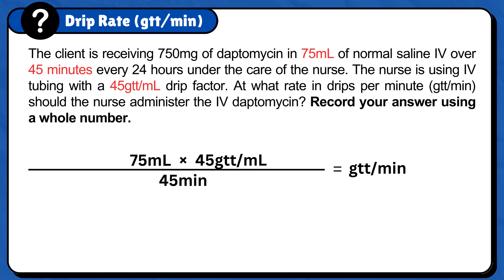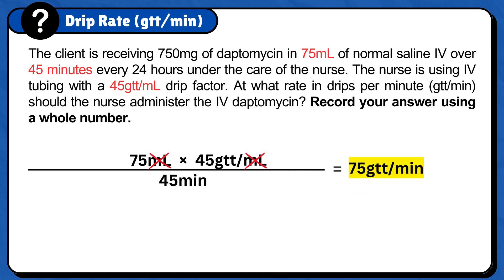75 milliliters times 45 gtt per milliliter divided by 45 minutes. Milliliter cancels out and the answer is 75 gtt per minute. So, 75 gtt per minute is the rate in drips per minute that the nurse should administer the IV daptomycin.